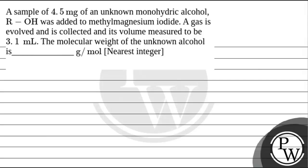In this question, a sample of 4.5 mg of an unknown monohydric alcohol (ROH) was added to methyl magnesium iodide. The gas evolved is collected and its volume is measured to be 3.1 mL. We need to find the molecular weight of the unknown alcohol in gram per mole, calculated to the nearest integer.